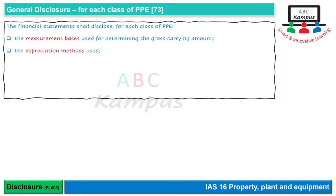Doosre number par aap batayenge Depreciation Method jo aap use kar rahe hain — for example Straight Line Method, Reducing Balance Method, Sum of Units Method, ya koi aur method. Ye har class of asset ke liye batana hoga; individual asset ke liye batane ki zaroorat nahi. Phir ya to asset ki Useful Life batani hai ya Depreciation Rate batani hai, jo ek class ke andar range bhi kar sakti hai, jaise 15 to 20%.